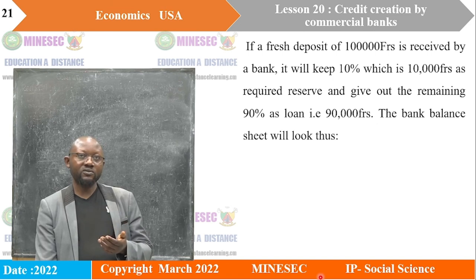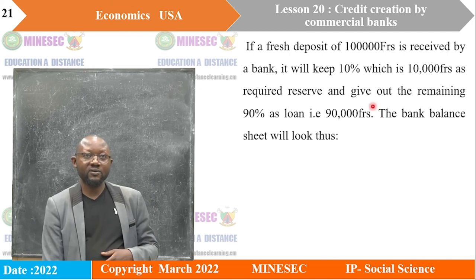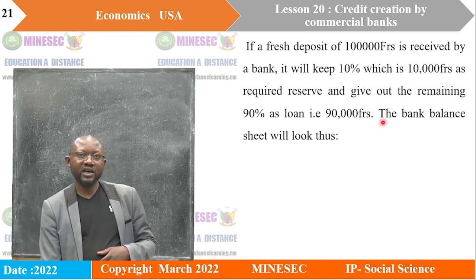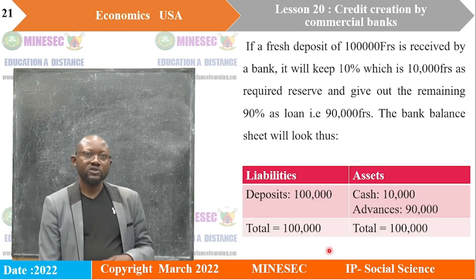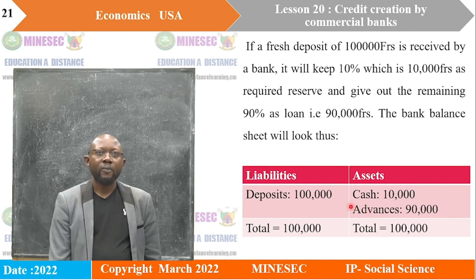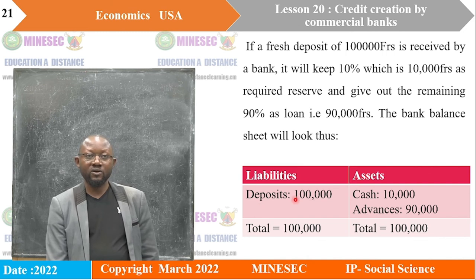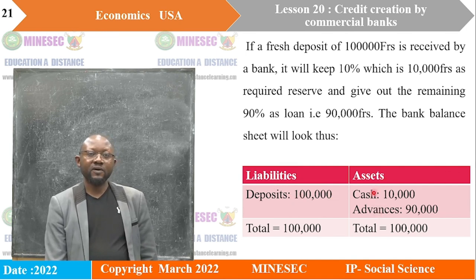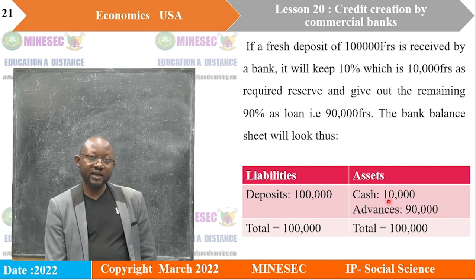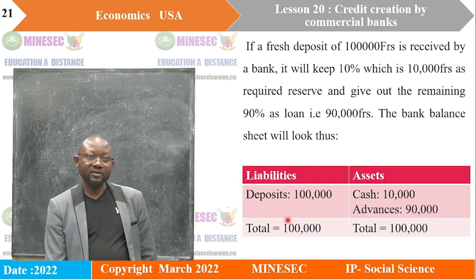Assume a fresh deposit of 100,000 francs is received by a bank. It will keep 10% — that is 10,000 francs — as required reserves, and the rest, 90%, which is 90,000 francs, will be given out as a loan. Looking at the balance sheet: the fresh deposit of 100,000 francs is a liability because that money belongs to a customer who will eventually get it back. Advances represent the loan, with 10,000 as cash reserve and 90,000 as loans. Total liabilities equal total assets: 100,000.